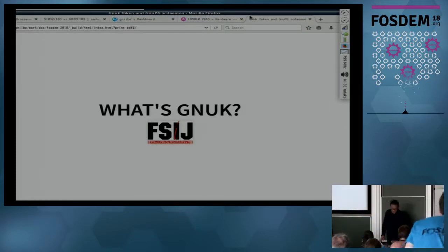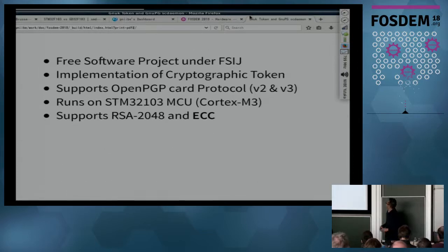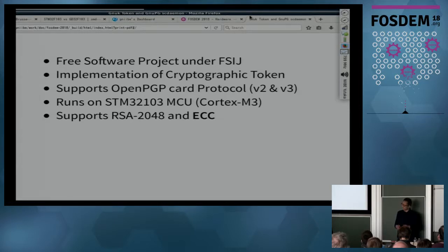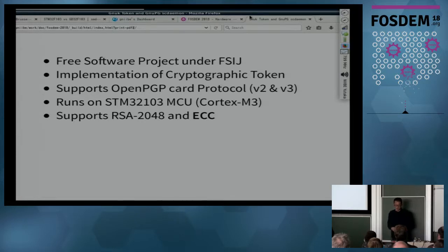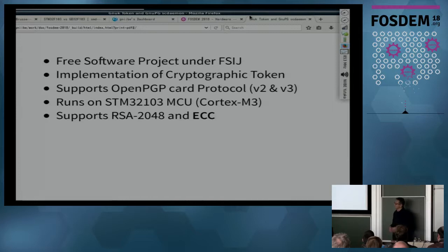What's GNUK? It's a FSIJ project — a free software initiative of Japan — and an implementation of a cryptographic token. It supports OpenPGP card protocol version 2 and version 3, and it runs on STM32F103, which is ARM Cortex-M3. It supports RSA 2048 and ECC. Somehow it works with RSA 4096, but it's very slow — it takes about 8 seconds or so to sign.